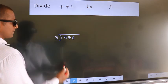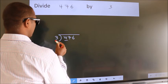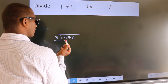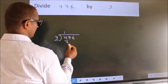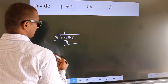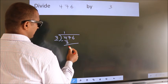Next. Here we have 4, here 3. A number close to 4 in 3 table is 3 once 3. Now, we should subtract. We get 1.